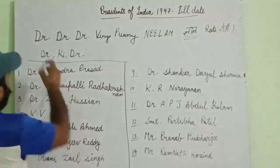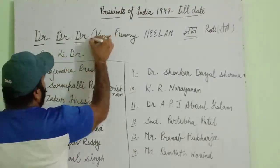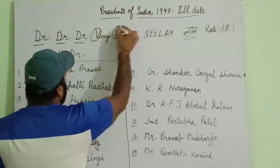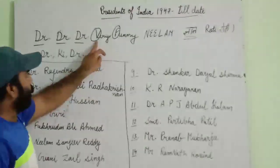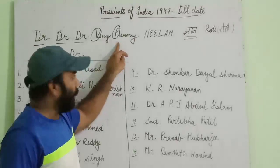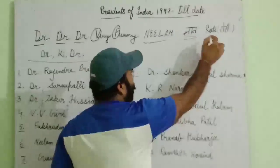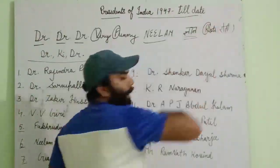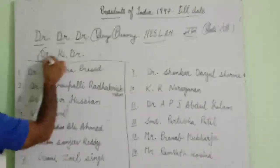Let's decode the line. We will use D for Doctor, V for Very, F for Funny, Neelam for N, Gyaan for G, R for Roti, and Doctor again at the end. These letters represent each president in order.